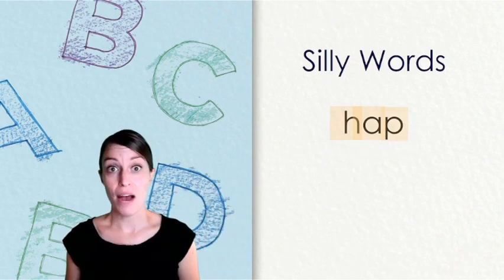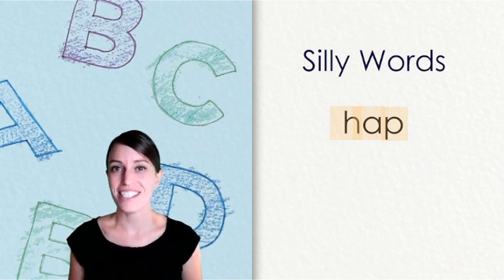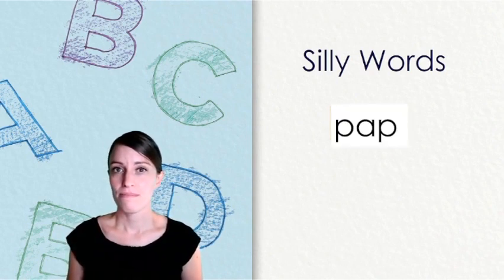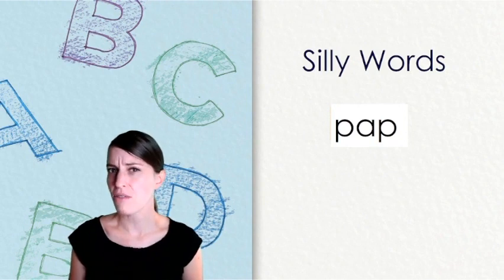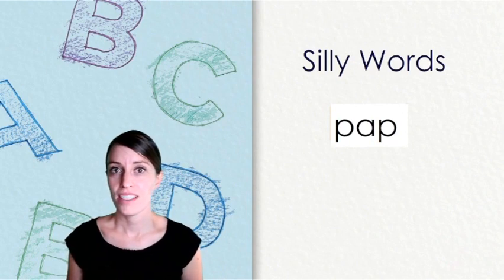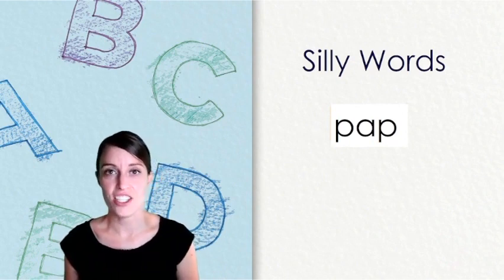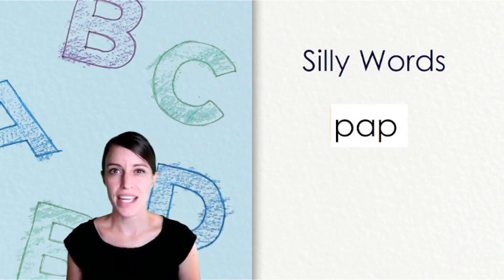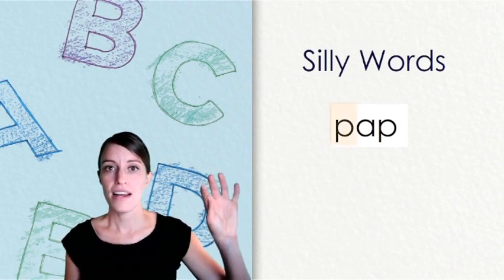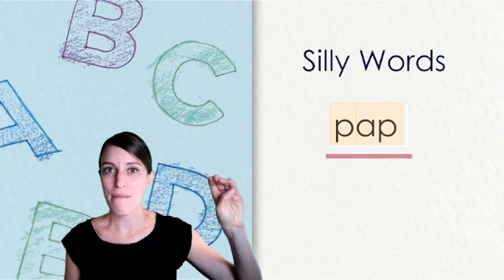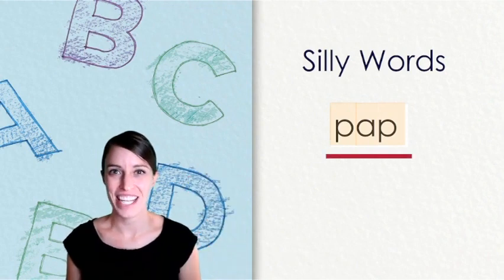Do you see how I used what I know about letters and sounds to decode this silly word? Let's do another one together. Take a look at this word. What do you notice about this word? That's right. It has an ending chunk that you know. Let's decode this word together by tapping out each sound. P-P-A-P. Blend it together. Pap. Great job reading those silly words.